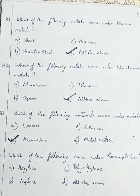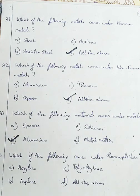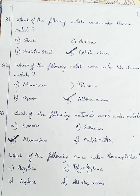Question 34: which of the following comes under thermoplastics? Option A: acrylics, Option B: nylons, Option C: polyethylene, Option D: all the above. Thermoplastics include acrylics, nylons, and polyethylene. So we are going with Option D, all the above.